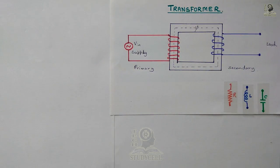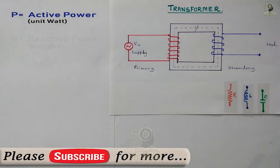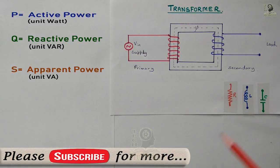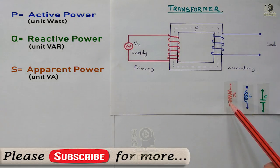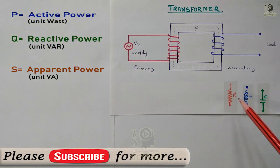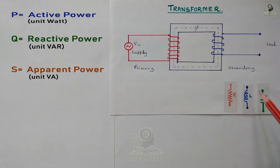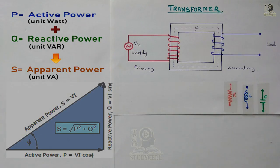In an AC circuit, there are three types of power: active power, reactive power, and apparent power. Active power is consumed by the resistive load. Reactive power is consumed by the inductive or capacitive load. And apparent power is a combination of active power and reactive power, as you can see from the power triangle.